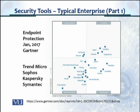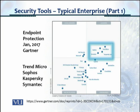You also have visionaries and niche players. In the four quadrants, along the x-axis we have completeness of vision — as you move to the right, we have more completeness of vision and better players. As you move up along the y-axis, we have ability to execute. If you look at Trend Micro, which is furthest to the right, meaning it has the best completeness of vision, and also the topmost vertically, it has the best ability to execute. So whatever lies furthest to the right and top would be the best vendor.